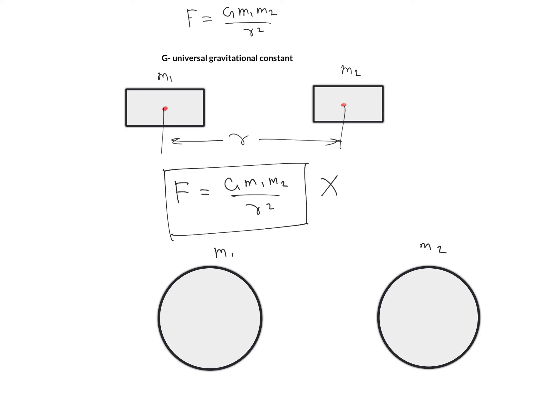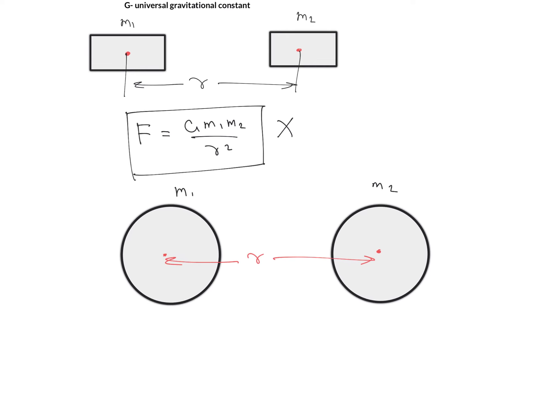For spherical objects, taking the distance between their centers as r, we can use F = G·m1·m2/r². This formula is applicable only for spherically symmetrical masses or for point masses. For extended objects of other shapes, we cannot directly apply it.